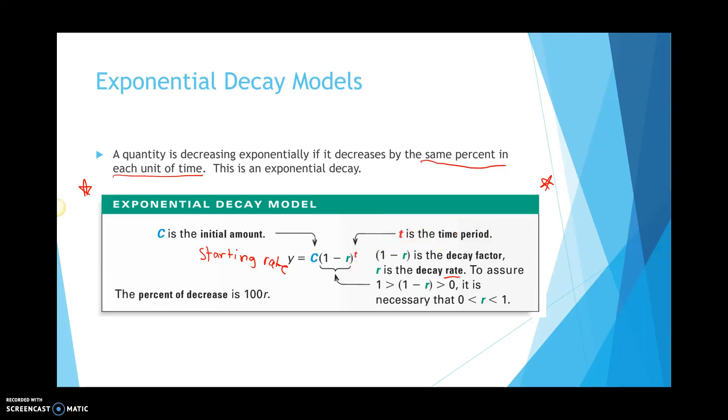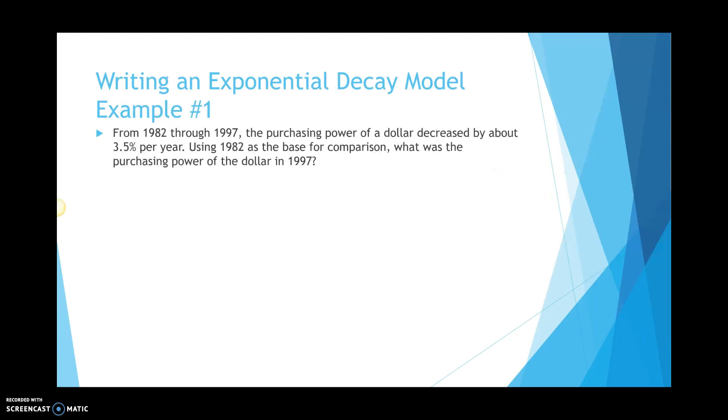So, let's just look at some examples, working with exponential decay. The first one here, it says, from 1982 through 1997, the purchasing power of a dollar decreased by about 3.5% per year. Using 1982 as the base for comparison, what was the purchasing power of the dollar in 1997?